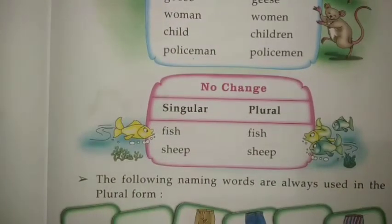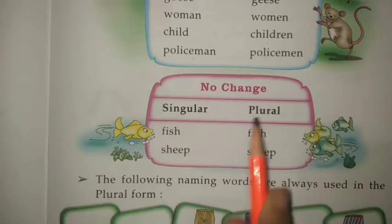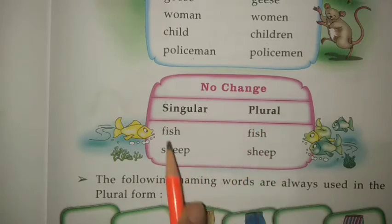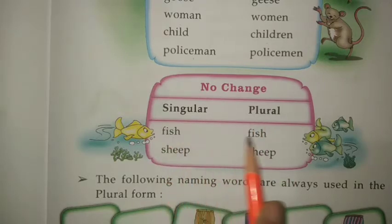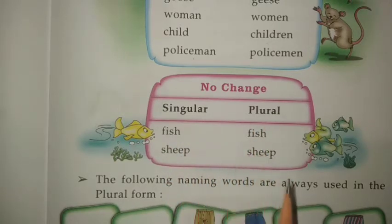No change. Some words have the same singular and plural form — जैसे कि fish और sheep. दोनों का same होता है.